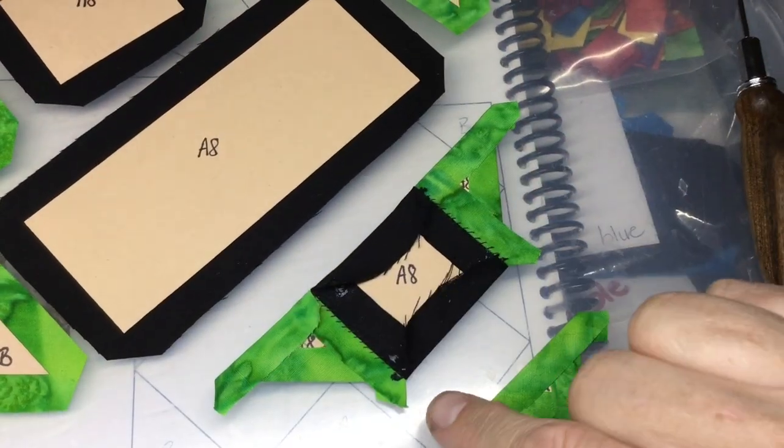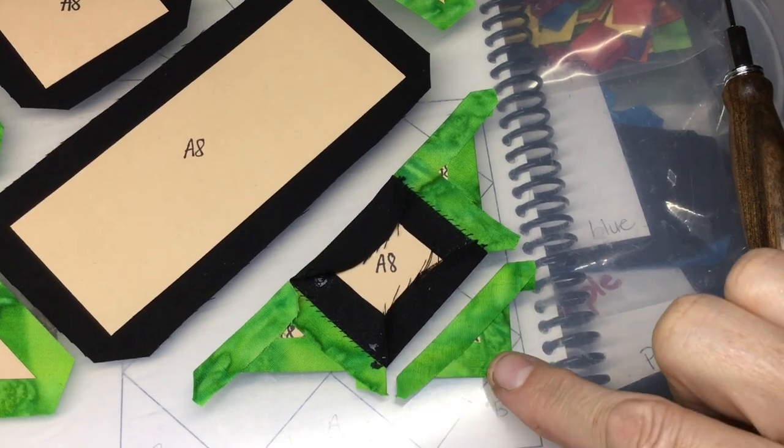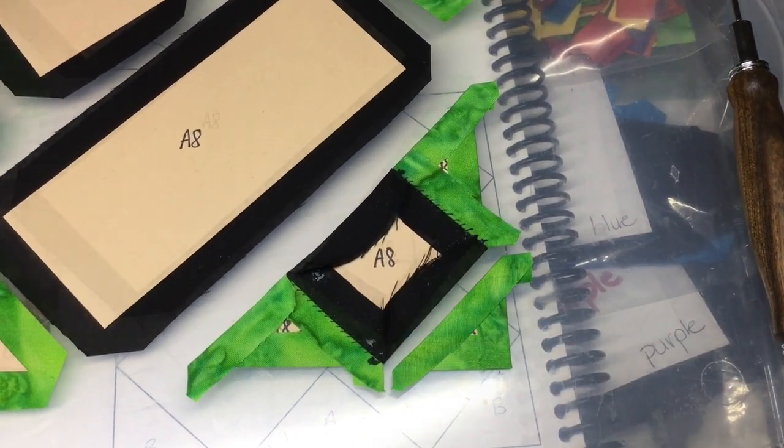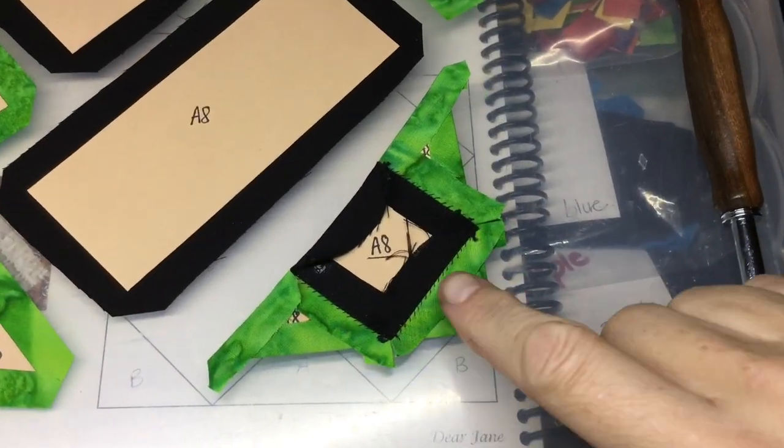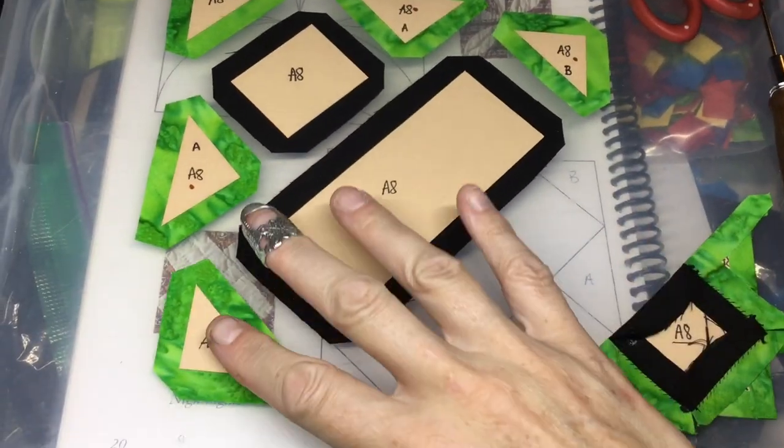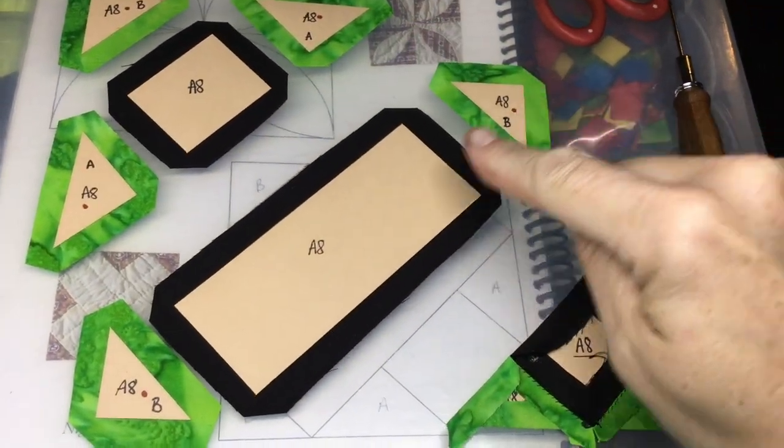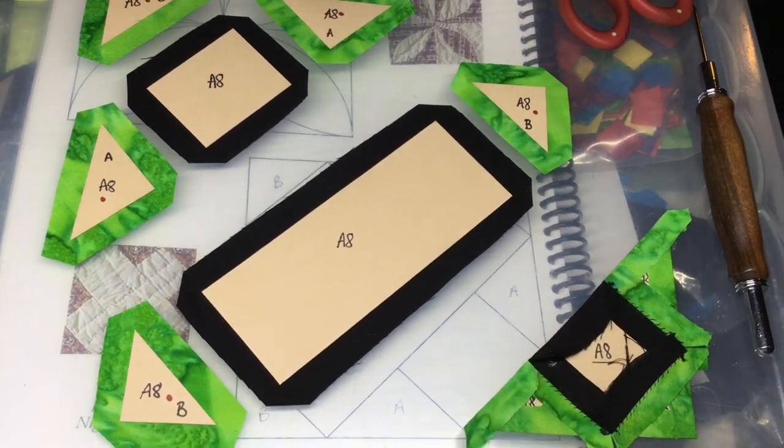I've got my row assembled here, and so now I'm going to attach my corner triangle. Got my corner attached, so I'm going to set this aside, and now I'm going to assemble this row after basting my pieces.